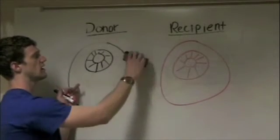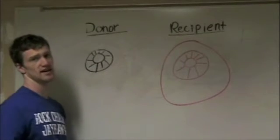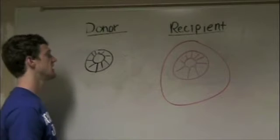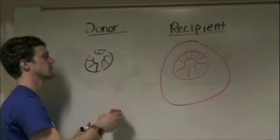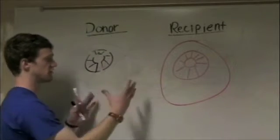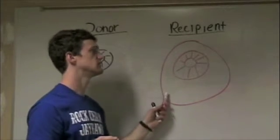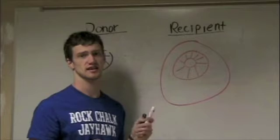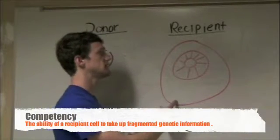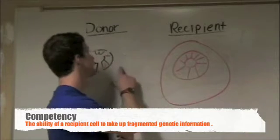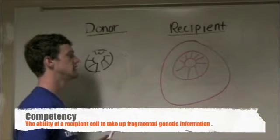The donor cell will swell and its wall will disappear. Once the wall disappears, the DNA is subject to a harsh environment, so it breaks into tiny fragments that float around in space. A unique quality of some types of bacterial cells is called competency — when the recipient cell can take up these fragmented pieces of DNA and attach them to its cell surface.